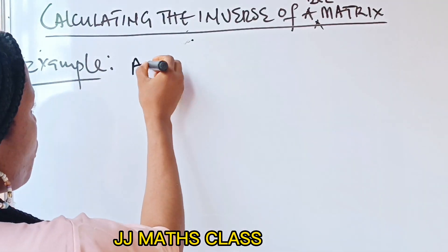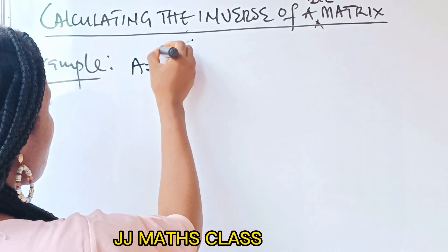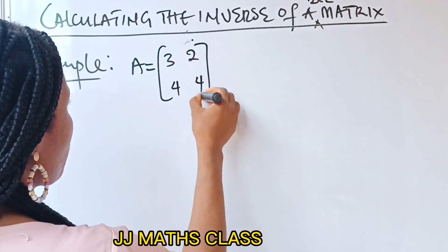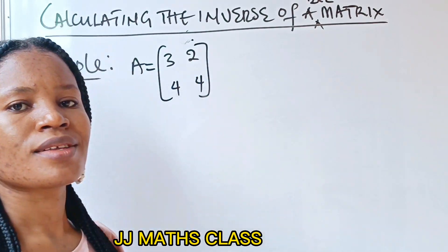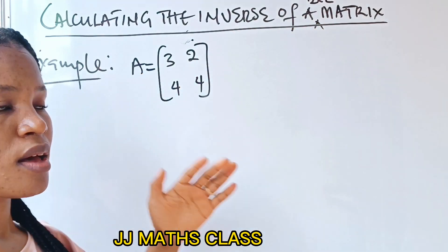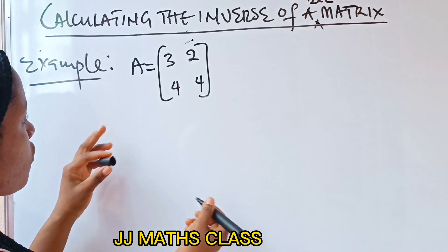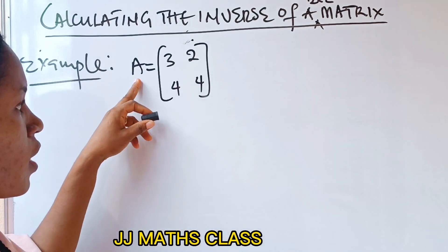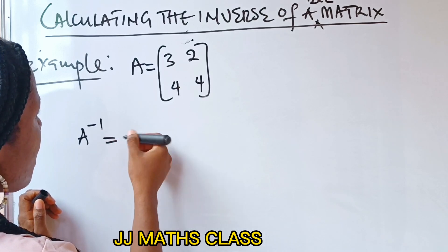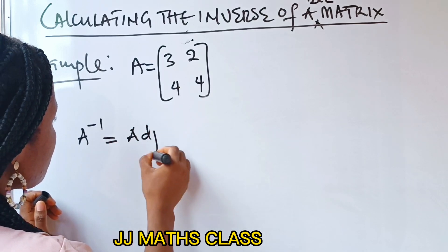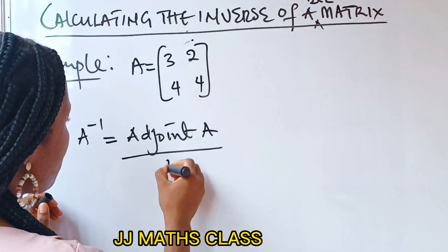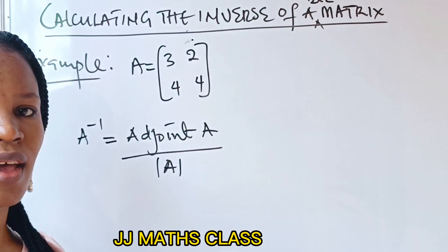A is equal to the matrix with elements 3, 2, 4, 4. First of all, there is a formula for calculating the inverse of a matrix. The formula for the inverse of A, written as A inverse, is equal to the adjoint of A divided by the determinant of A.